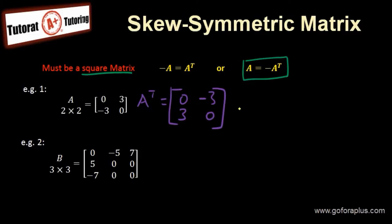Now what is minus A transpose? So we just take the negative of each element. So the 0 becomes 0, minus 3 becomes 3, 3 becomes minus 3, and the last element is 0. Now we can conclude that this is A equals to minus A transpose. So this is a skew symmetric matrix.